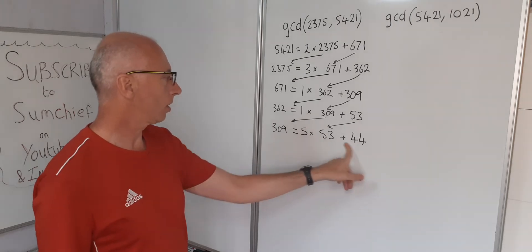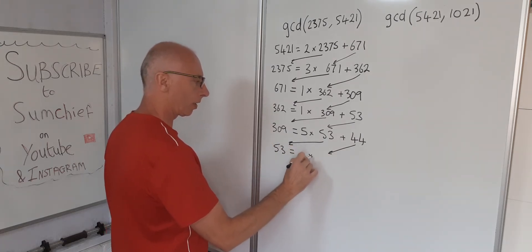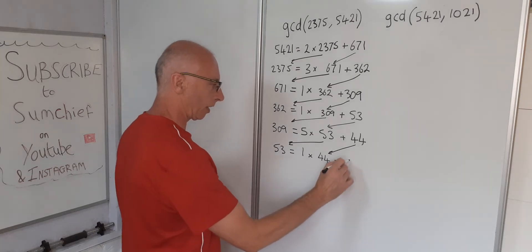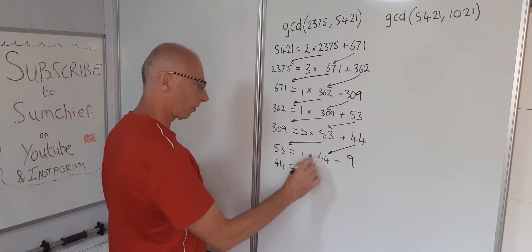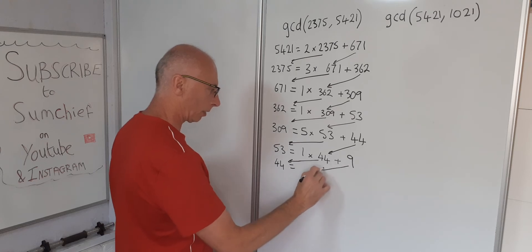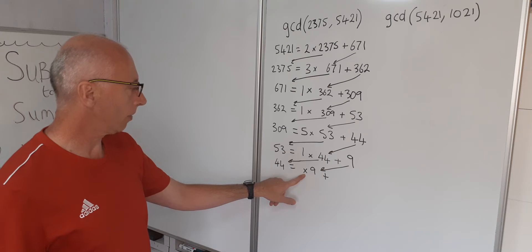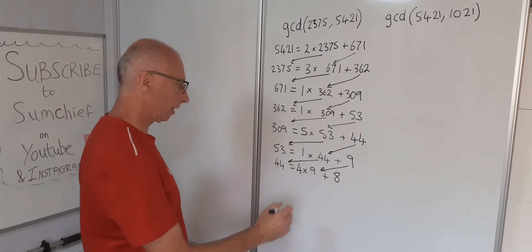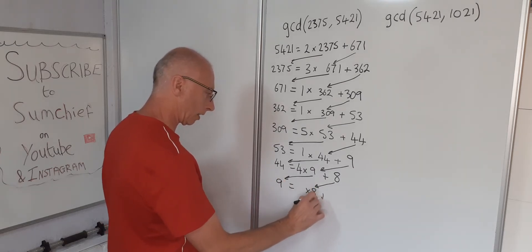So this is still a true statement, we continue with the algorithm. 53 equals something times 44 with a remainder. Again we're with a 1 here and then 9 remainder. Bring the 44 out front. 44 equals something times 9 with a remainder. That's going to be 4 times 9 plus 8.